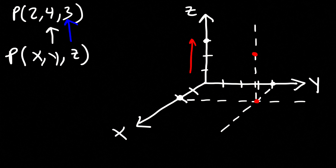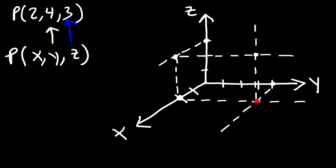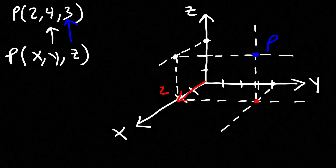You have to make sure that the lengths match. But if you want to avoid mistakes, here's another approach. Travel 2 units along the x-axis, draw a line parallel to the z-axis, then travel 4 units parallel to the y-axis to get the point of intersection. From there, travel 3 units parallel to the z-axis.